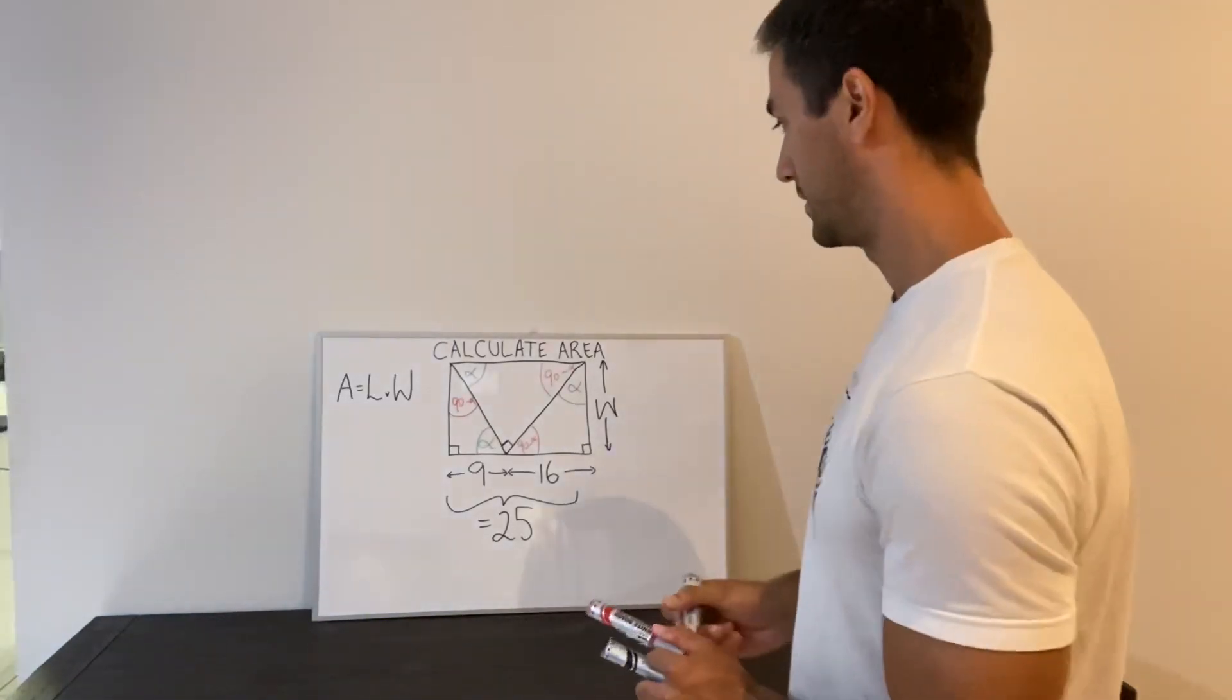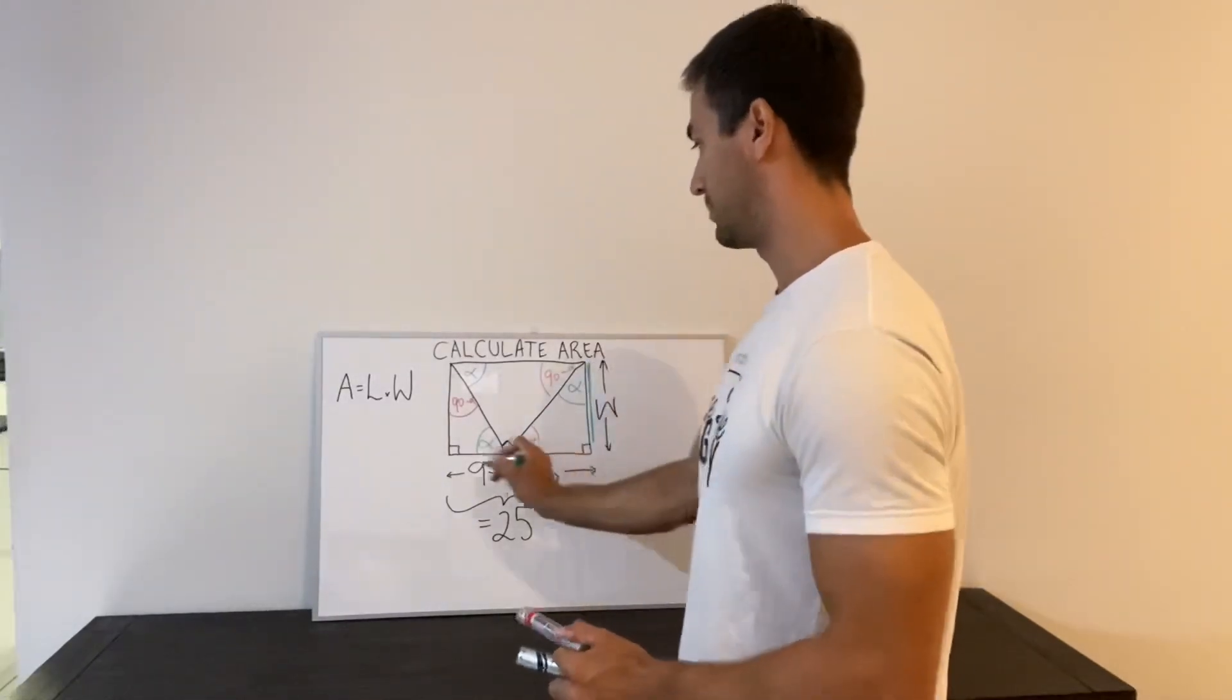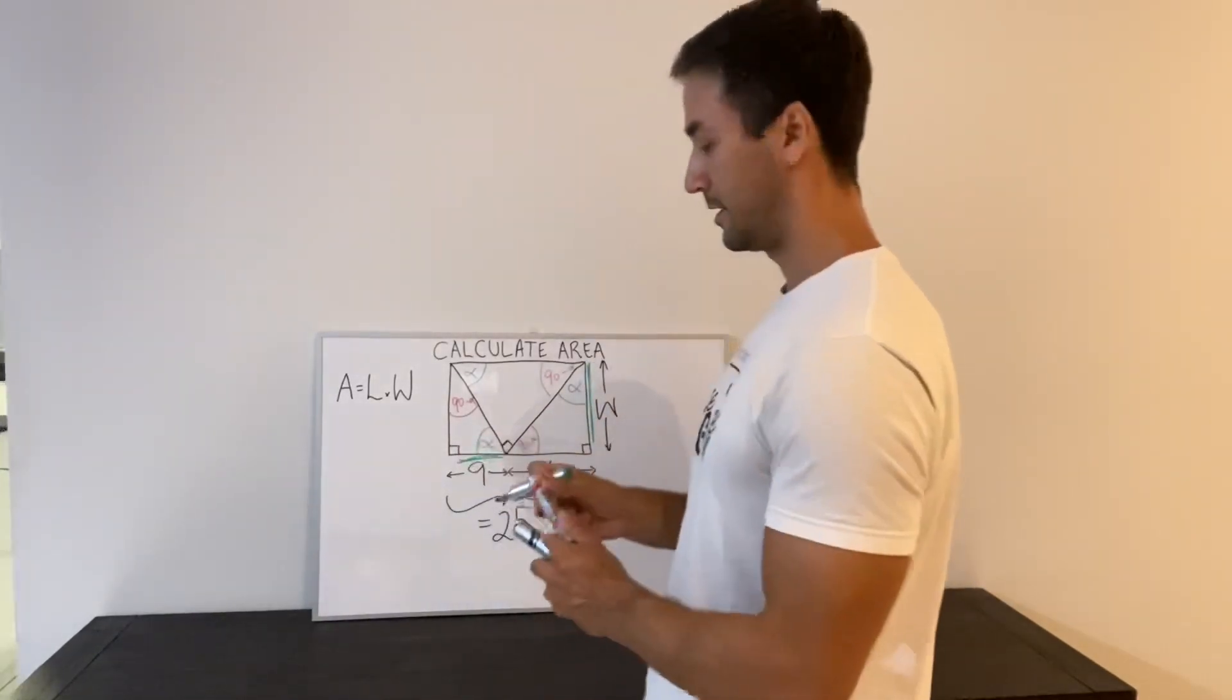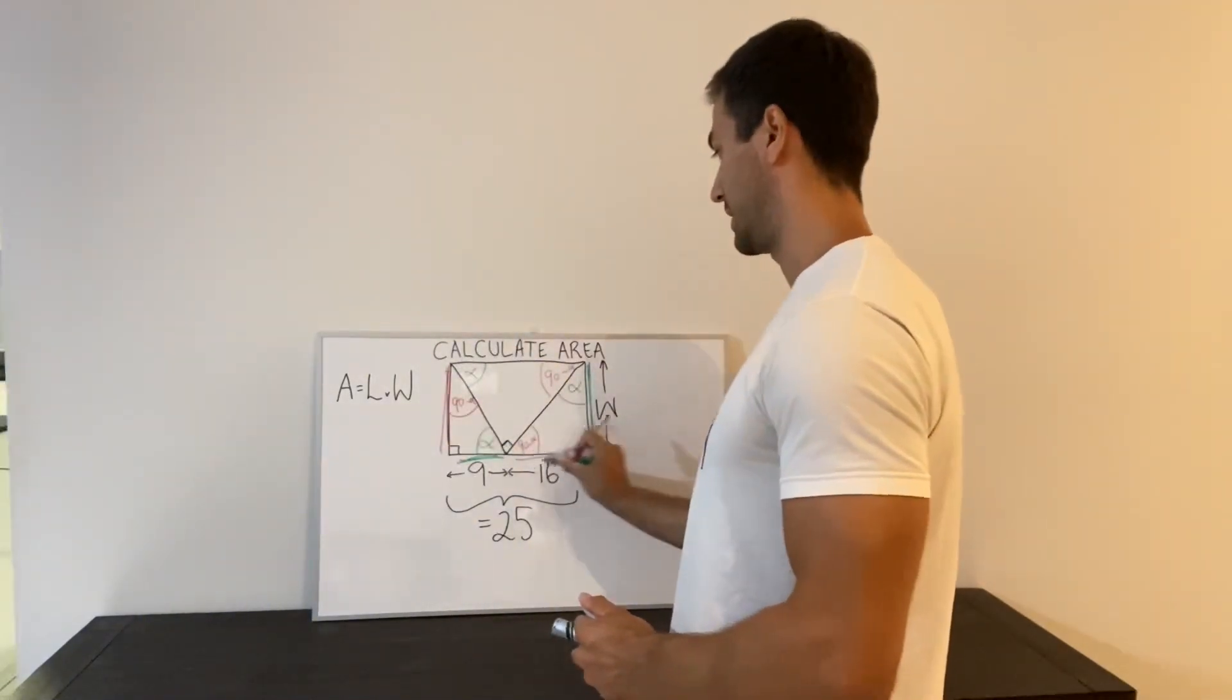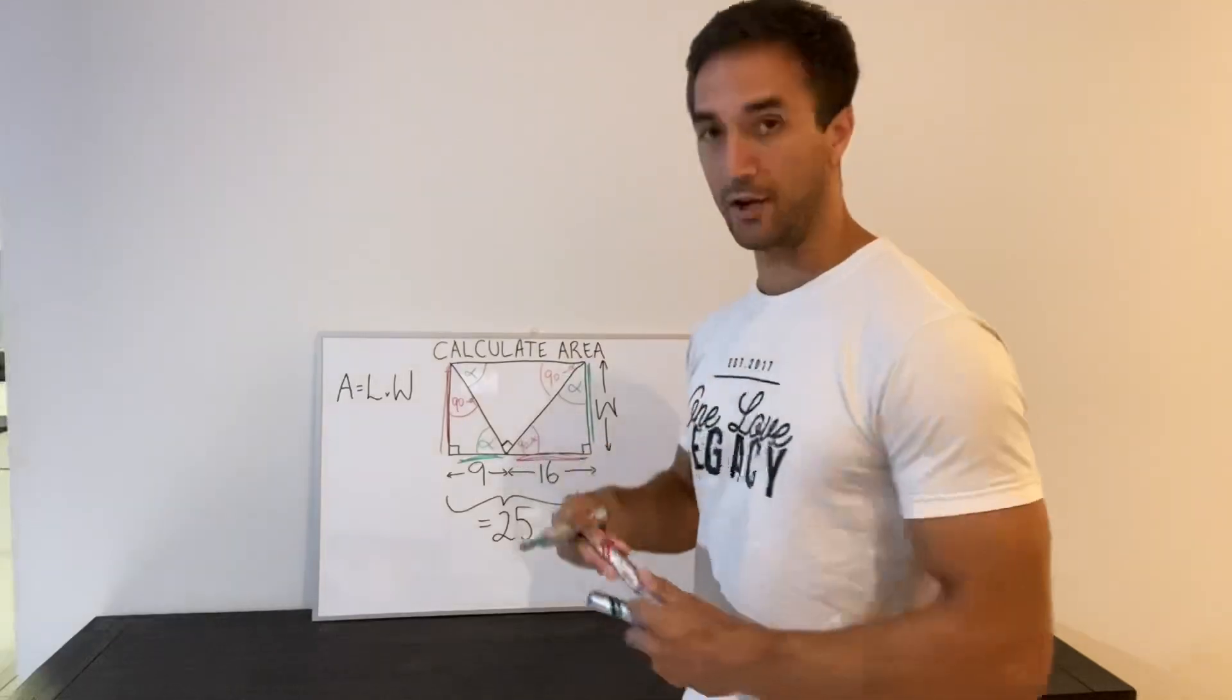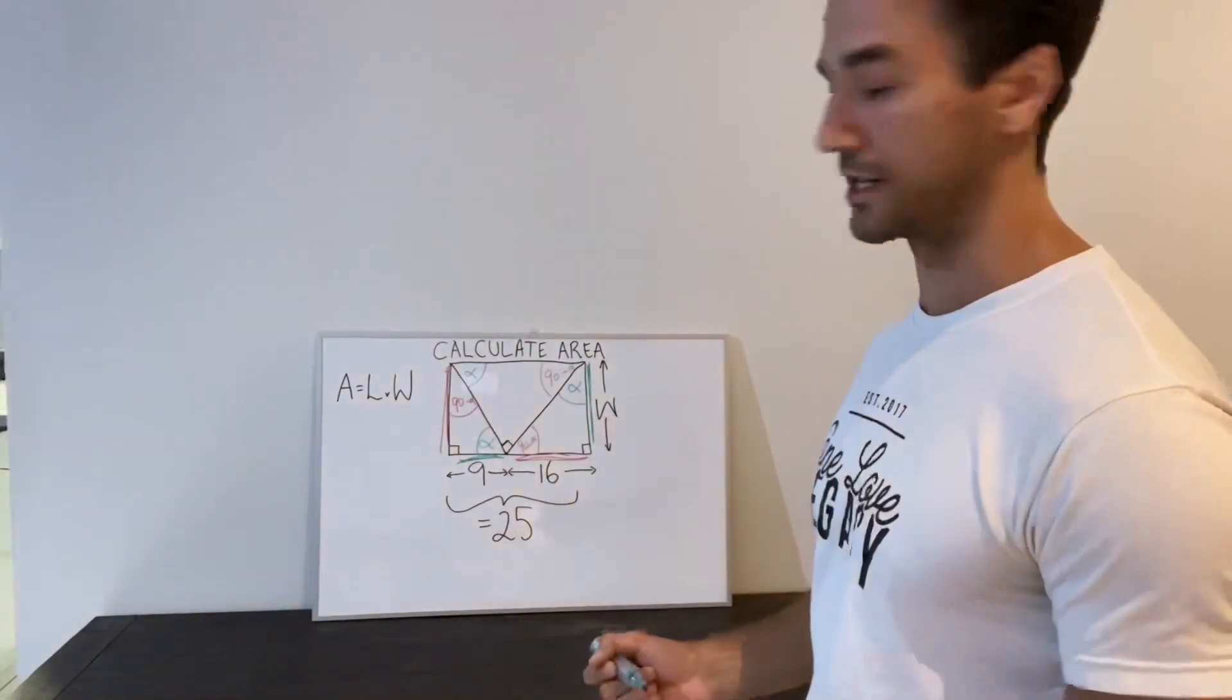Which tells us that this green side here should match with this side here. And this red side here should match up with this red side here. And so now we can get an equation to link the height to the two distances that we know.